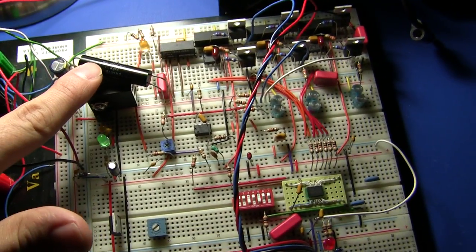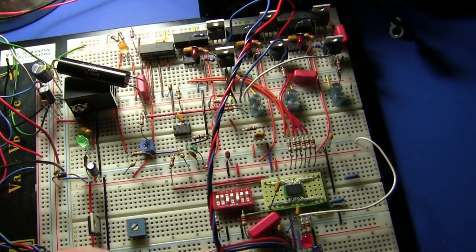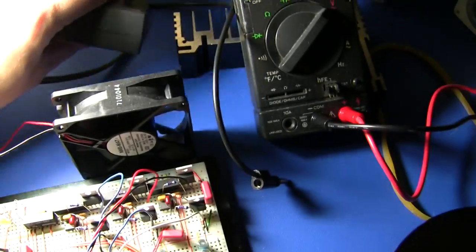There's also a current sensor resistor, a 5-volt regulator which runs everything, and that runs off its own separate wall wart.